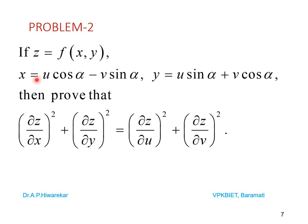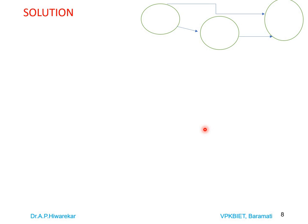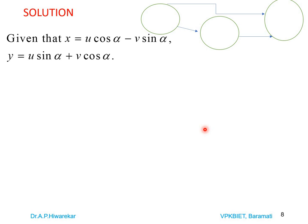Problem number 2: if z is a function of x and y, where x = u cosα - v sinα and y = u sinα + v cosα, prove that (∂z/∂x)² + (∂z/∂y)² = (∂z/∂u)² + (∂z/∂v)². To solve this, treating α as a constant, z is a function of x and y, and x and y are functions of u and v, so z is a composite function of u and v. The chain rule gives: ∂z/∂u = (∂z/∂x)(∂x/∂u) + (∂z/∂y)(∂y/∂u).